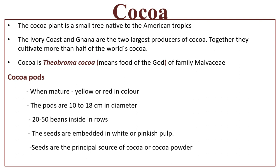The cocoa plant is a small tree native to the American tropics. The Ivory Coast and Ghana are the two largest producers of cocoa; together they cultivate more than half of the world's cocoa. The botanical name of cocoa is Theobroma cacao. It is also known as 'food of the gods,' of the family Malvaceae.